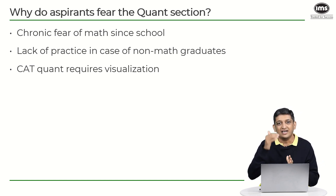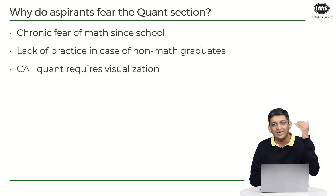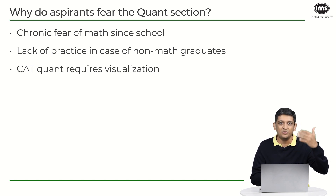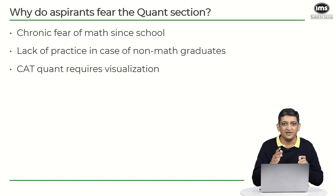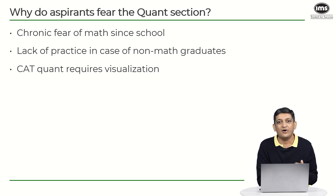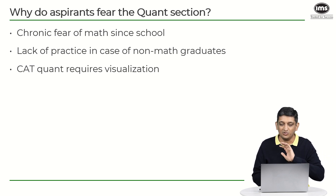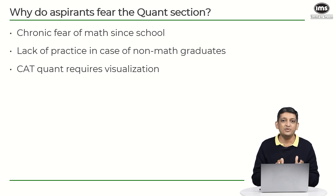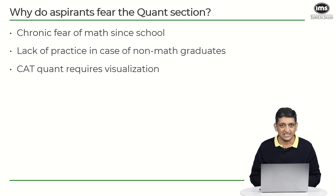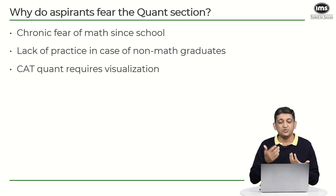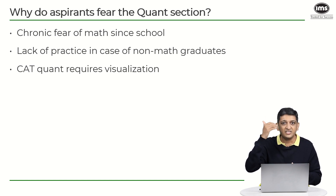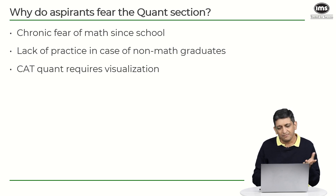Also, CAT quant requires a lot of visualization. What you did in school was a step-by-step approach: define variables, follow steps, apply a formula, get the answer. But in the CAT, you are not awarded marks for steps — if your eventual answer is wrong, you get no marks; if it is right, you get marks even if you guessed. Because it requires a lot of visualization and holding multiple steps in mind without writing everything down, it can be intimidating.